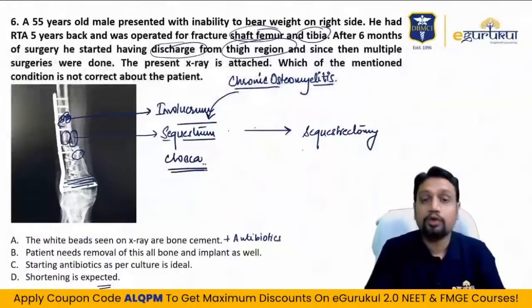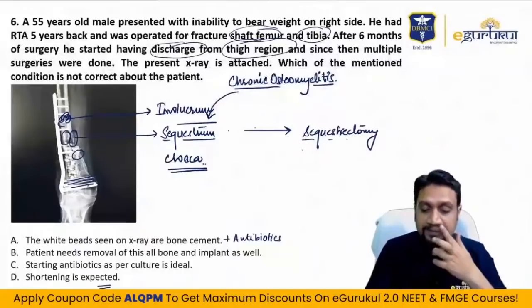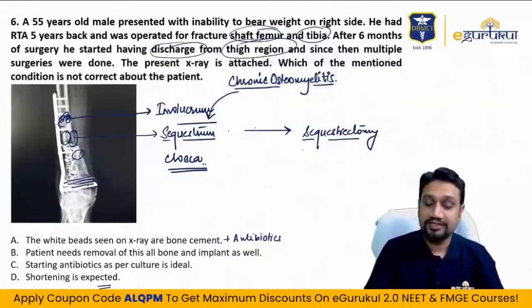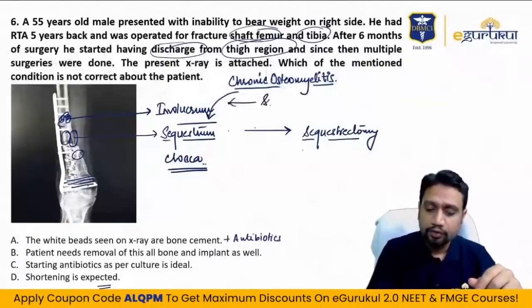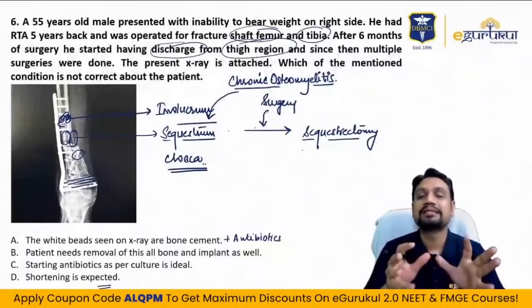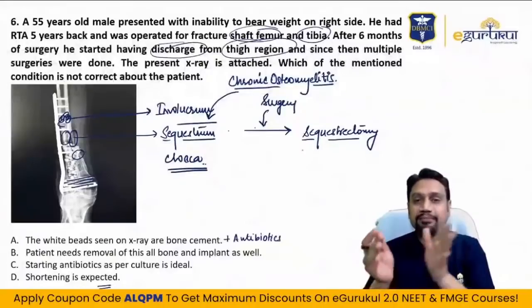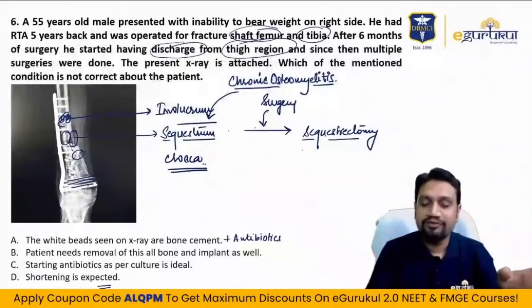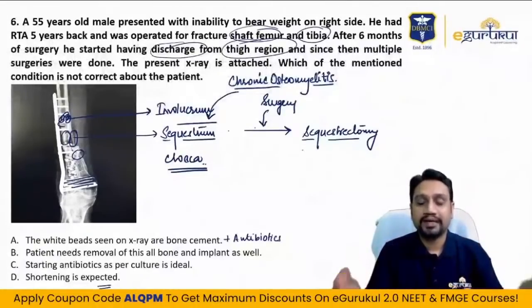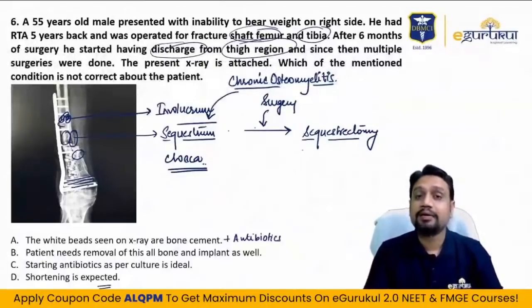Treatment plan difference: for chronic osteomyelitis, primary treatment is surgery — sequestrectomy. For acute osteomyelitis, primary treatment is antibiotics, then surgery if needed. In chronic cases, a sequestrum is present as a dead focus — until removed, infection cannot be fully eliminated. Chronic osteomyelitis has been asked multiple times in last two to three years — be thorough with it.